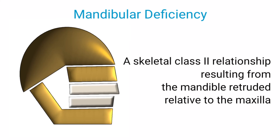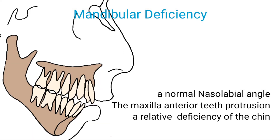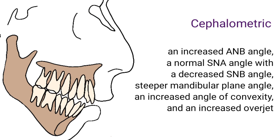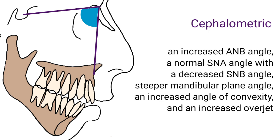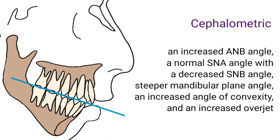Mandibular Deficiency: A skeletal Class II relationship resulting from a mandible that is small or retruded relative to the maxilla. Facial appearance is characterized by a normal initial level angle, relative protrusion of the maxillary anterior teeth, and a relative deficiency of the chin caused by the small size or retruded position of the mandible. Cephalometric shows an increased ANB angle, a normal SNA angle with a decreased SNB angle, steeper mandibular plane angle, an increased angle of convexity, and an increased overjet.